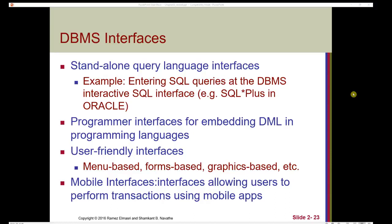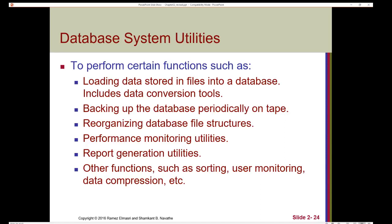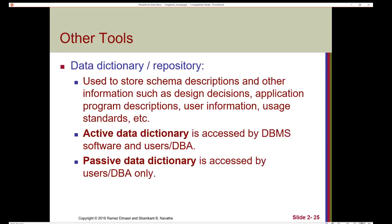There are also mobile interfaces that allow users to perform transactions using mobile apps. In addition to communicating with data using the DBMS, we also need several database system utilities to perform functions like loading data stored in files into a database, including data conversion tools. We need utilities to back up the database periodically — this is very important because we don't want to lose our data. Utilities can also be used to reorganize database file structure, monitor performance, generate reports, and other functions like sorting, user monitoring, or data compression. Additional tools include data dictionaries and repositories, used to store schema descriptions, design decisions, application program descriptions, user information, and usage standards.